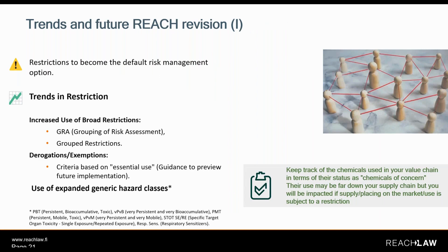Looking at trends in the restriction process: from the recent proposal to delist chromium trioxide and chromic acid from the authorization list and put a restriction in place instead, to the universal PFAS restriction, we can see that restrictions are becoming the go-to risk management option. Looking ahead, the restriction process has been pegged for changes in the REACH revision. It's probable there will be an increased use of broad restrictions — in particular the hazard classes in scope of the Generic Risk Approach (GRA) will likely be expanded significantly, meaning far more chemicals will be in scope.